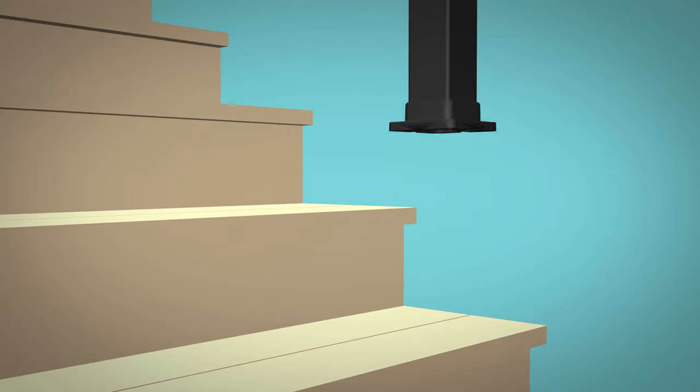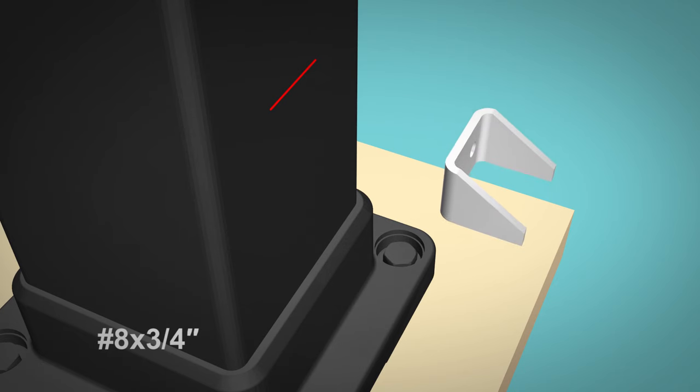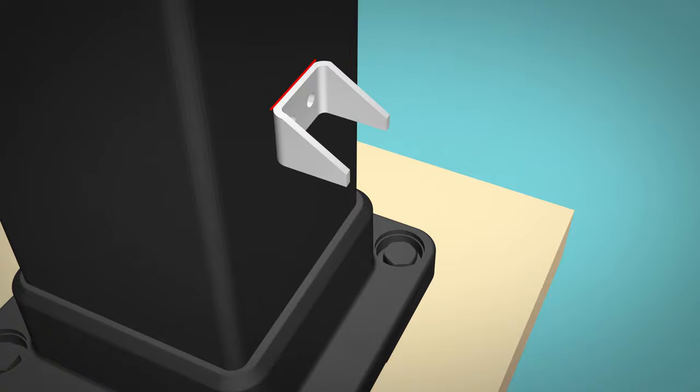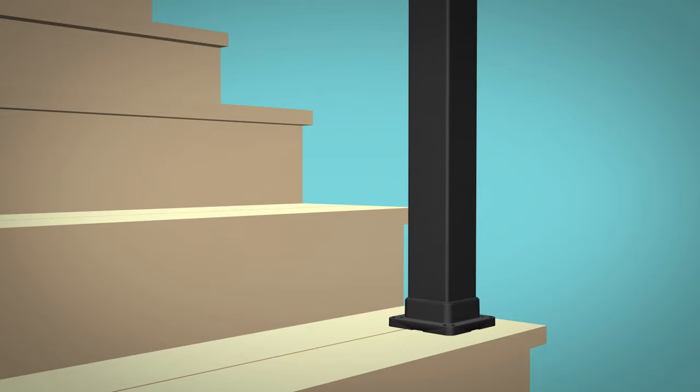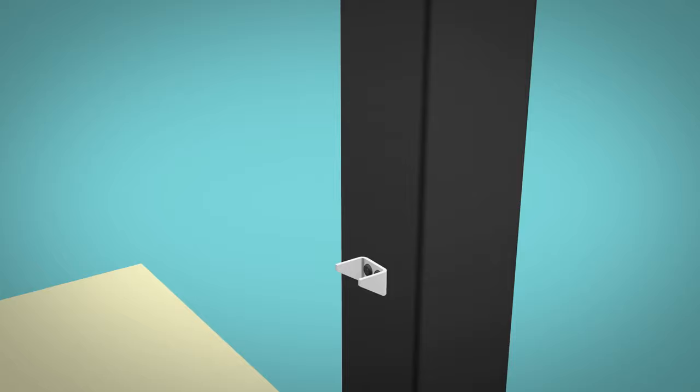Remove the panel and bottom post, then attach the stair panel attach clips at marked location. Center clip on post and secure with two number eight by three quarter inch self drilling screws. Once the stair panel attach clips have been installed, reattach the lower three inch post to the bottom step or landing. Then place the stair panel onto the lower stair panel attach clips.